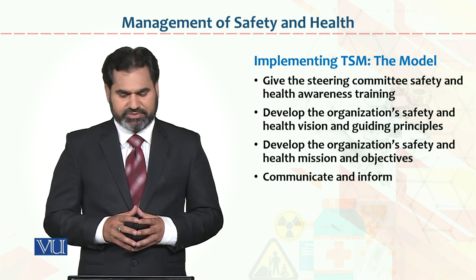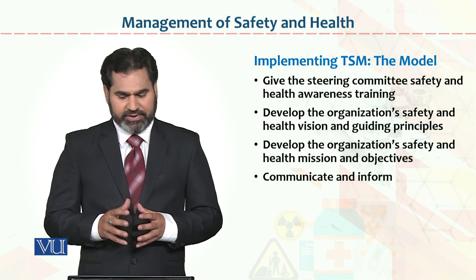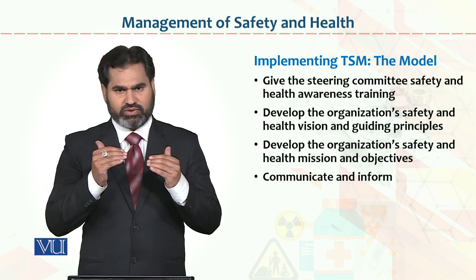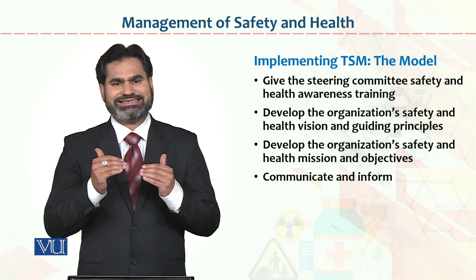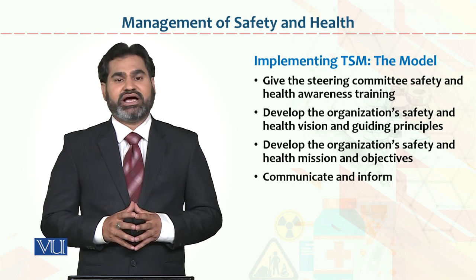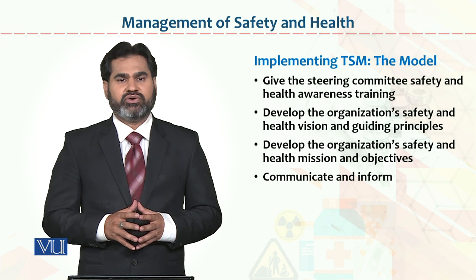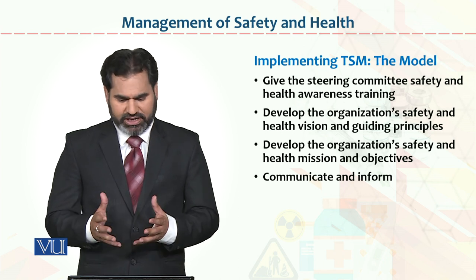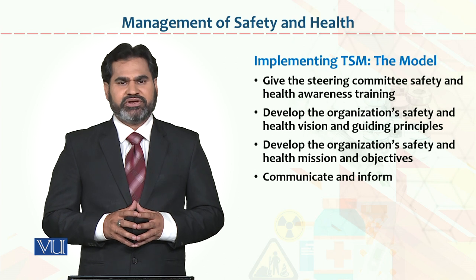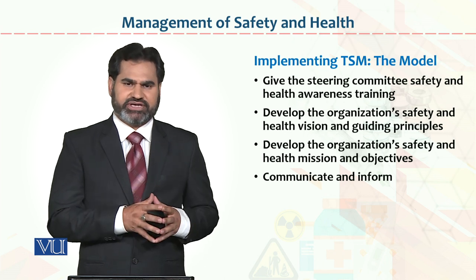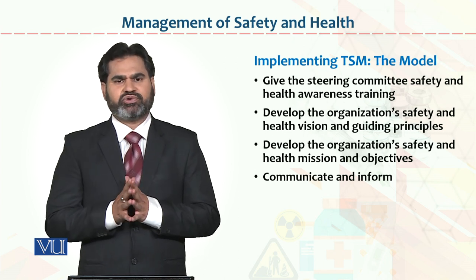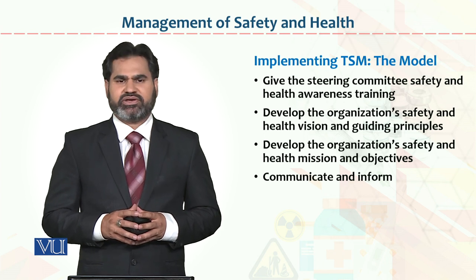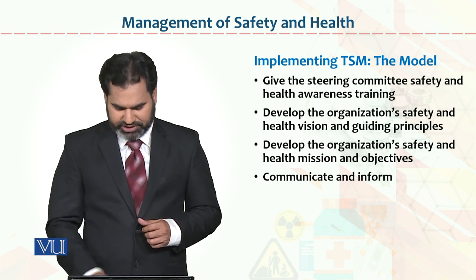Develop the organization's safety and health missions and objectives. A mission must be further broken down into goals, objectives, strategies, and tactics; otherwise the organization's mission will not be achieved. Finally, communicate and inform — these goals should not only be on paperwork but must be communicated top to bottom throughout the hierarchy so that proper results can be achieved.